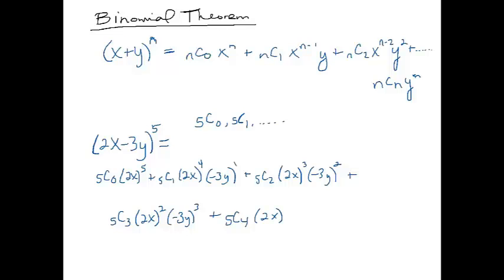Now that's just multiplying by 2x and then negative 3 to the fourth power, and then our last term would be 5 choose 5 times negative 3y to the fifth power.